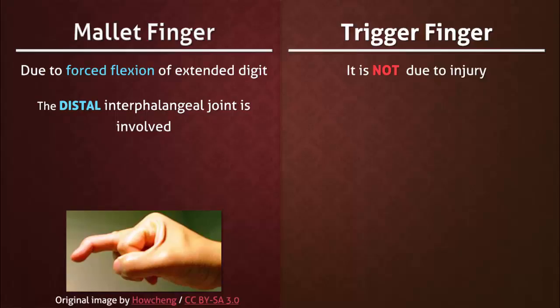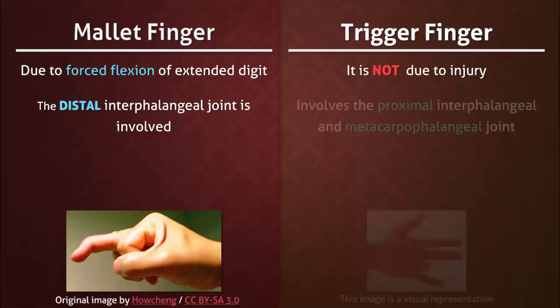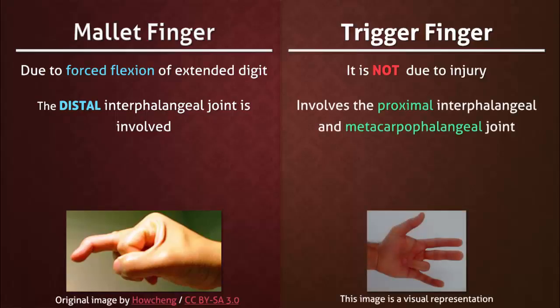With mallet finger, the distal interphalangeal joint is injured, but with trigger finger, the proximal interphalangeal joint and the metacarpophalangeal joint are involved.